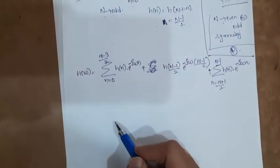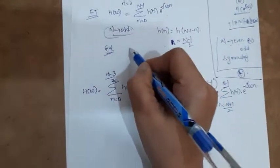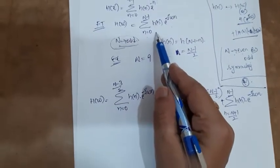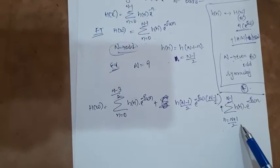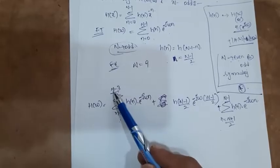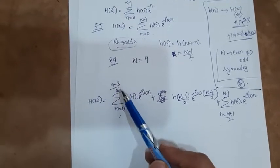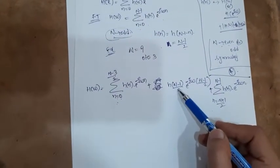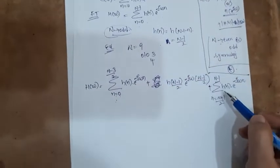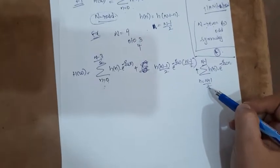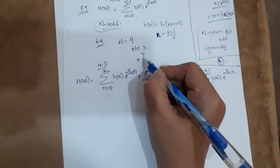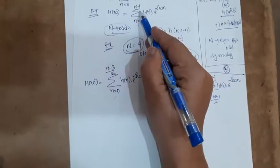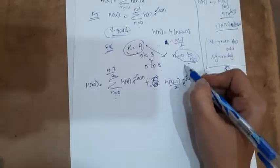To illustrate this splitting, consider N=9 as an example of an odd number. The first summation runs from n=0 to (9-3)/2 = 3. The middle term corresponds to n=(9-1)/2 = 4. The third summation runs from n=(9+1)/2 = 5 to N-1 = 8. Together, 0 to 3, then 4, then 5 to 8 covers the full range 0 to 8 — the same as n=0 to N-1.